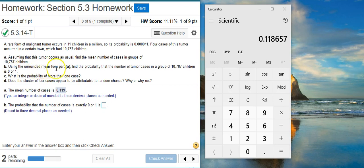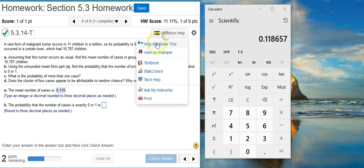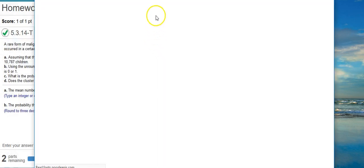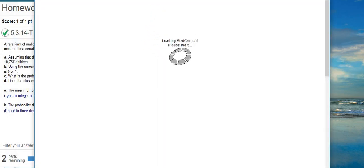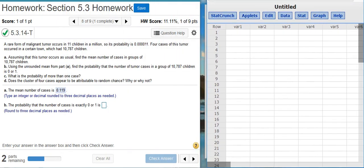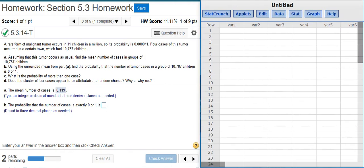And then the unrounded mean we're just going to take directly from the calculator here. So the first step is to load up StatCrunch. I'm going to pop that out here and then resize this window so that it's more visible to see what's going on.